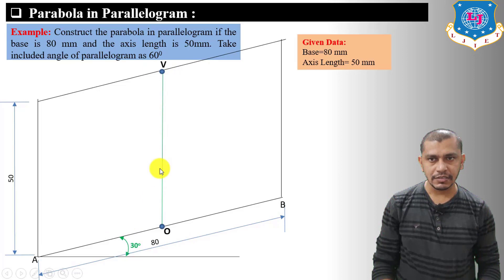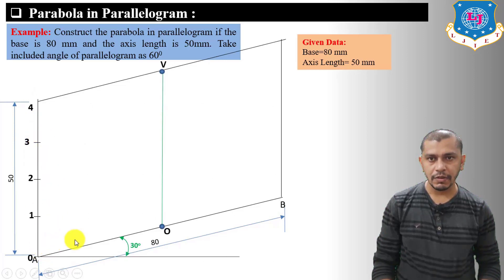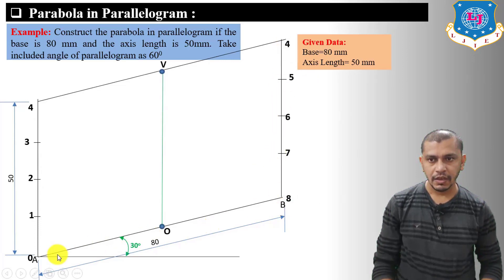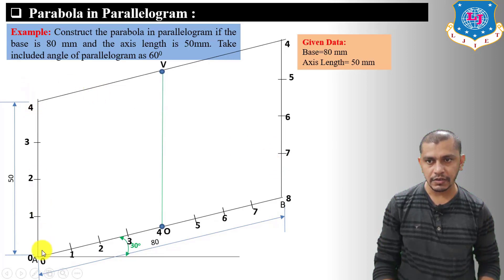After showing the base and axis, apply the same method as the rectangle method. Divide the side lines into four equal divisions each. Points one, two, three, four on one side and five, six, seven, eight on the other side. Then connect these points to V — zero to V, one to V, two to V, three to V.